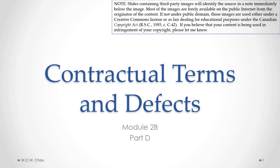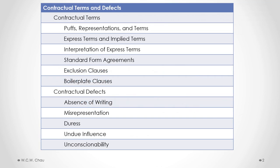Hello, it's Waylon Chow and this is Contractual Terms and Defects, Module 2B, Part D. In this part we'll look at the first two contractual defects: absence of writing and misrepresentation.